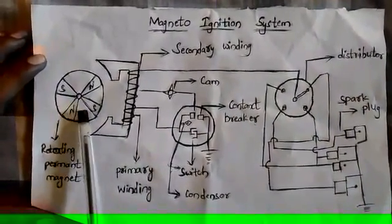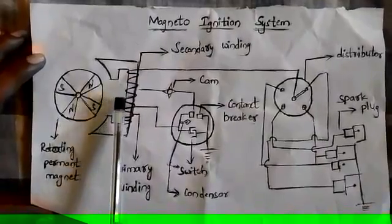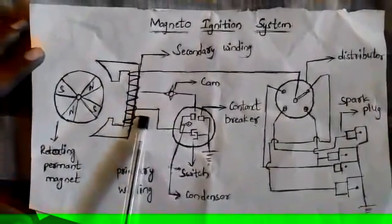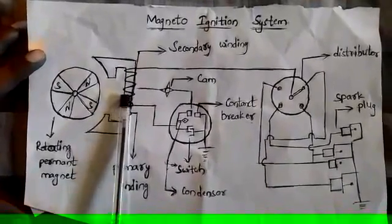when the permanent magnet rotates, that creates a magnetic field in the primary winding and the secondary winding. When the switch turns on, the current flows through the primary winding and secondary winding.